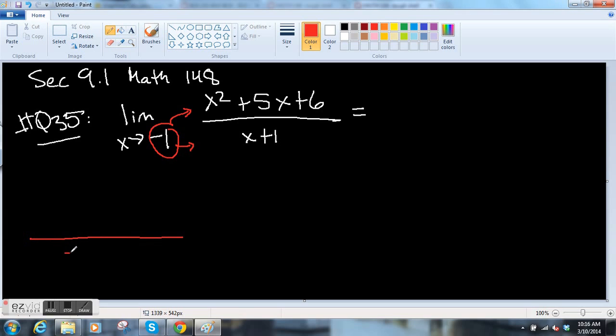So we have minus 1 plus 1 on the bottom, and on top we have minus 1 squared plus 5 times minus 1 plus 6. Okay, so that's 0 divided by 1 minus 5 plus 6. Oh, so that's 7, right? 6, 7 minus 5 is 2. So it's 2 over 0.